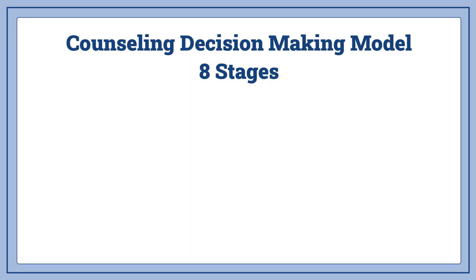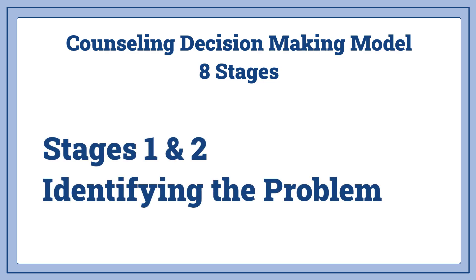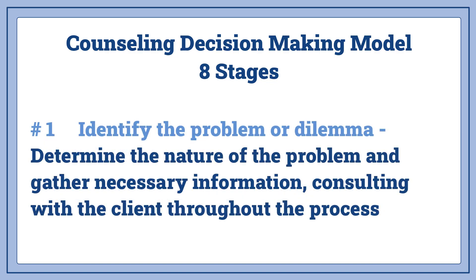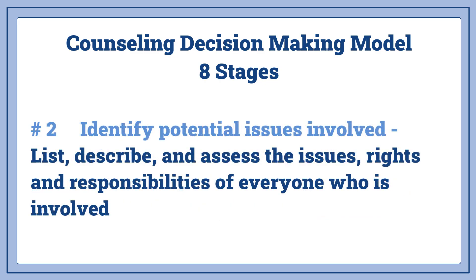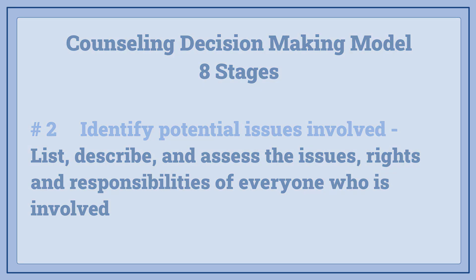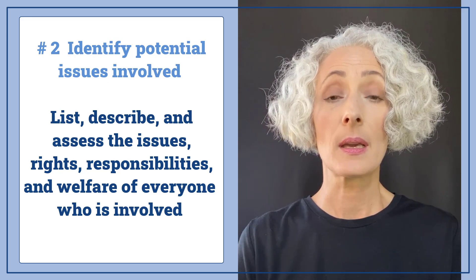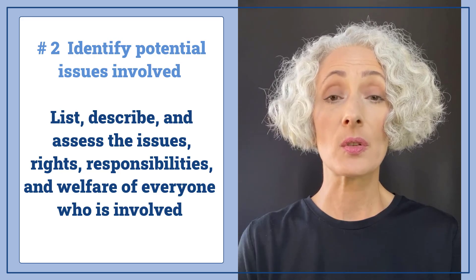Another decision-making model is by Corey, Corey, and Callanan. This is a counseling decision-making model with eight stages. Stages one and two are identifying the problem. Stage one: identify the problem or dilemma — determine the nature of the problem, gather necessary information, and consult with the client frequently. Stage two: identify potential issues involved — list and describe the issues, assess the rights, responsibilities, and welfare of everyone involved, and consider the broader social or cultural context.